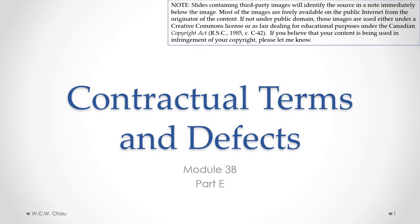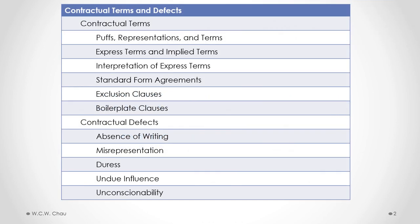Hello, this is Waylon Chow, and welcome to Contractual Terms and Defects, Module 3B, Part E. In this part, we'll look at the contractual defects of duress, undue influence, and unconscionability. All three of these defects can be grouped under the heading of unfairness that occurs during the bargaining process of a contract.